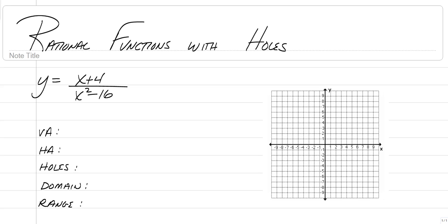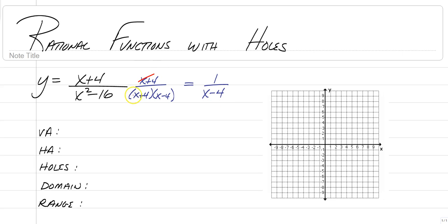To start, we're gonna simplify this function. Remember, the reason there is a hole is because we're gonna graph the original function, not the simplified one. So if we factor the denominator, we have x plus 4 over x plus 4 times x minus 4, and the x plus 4's cancel. So our simplified equation is 1 over x minus 4. We are going to start with the original equation — this is what we're actually gonna graph.